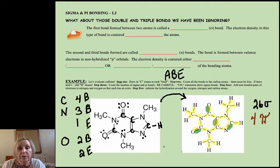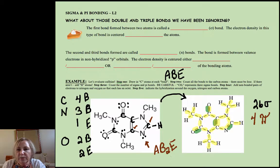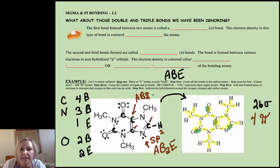Now if you wanted to determine the hybridization around that nitrogen: that nitrogen has two things hanging off of it — that carbon and that carbon — and it has one lone pair, so B plus E equals three, making it SP2 hybridized. This carbon has three things hanging off of it; it's an AB3 carbon, so I need an S, a P, and a P — it's also SP2 hybridized.